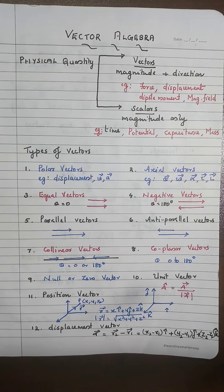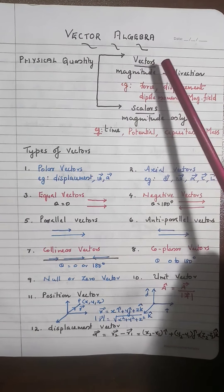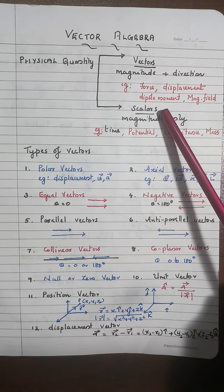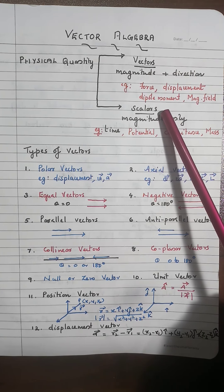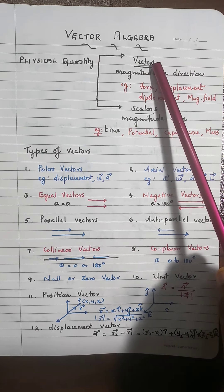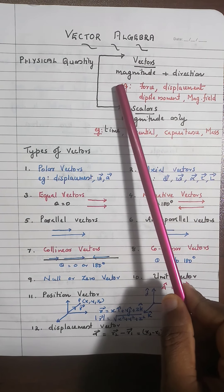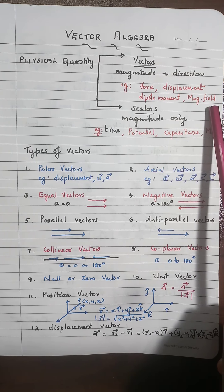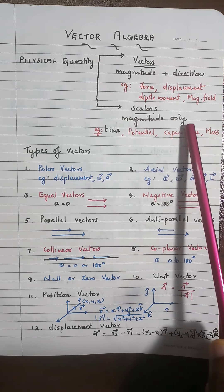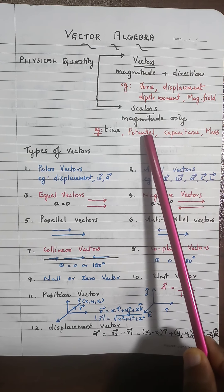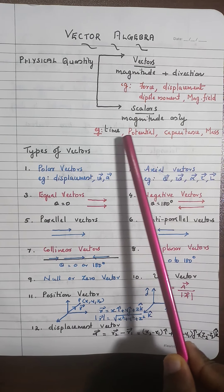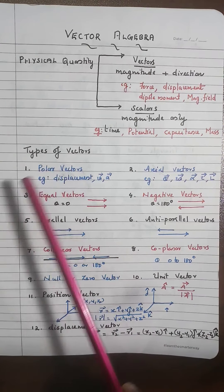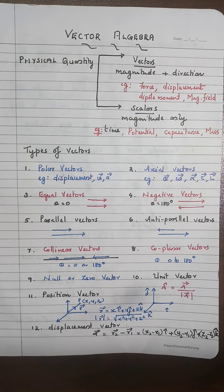We know that physical quantities — measurable quantities — are classified into vectors and scalars. Vectors are physical quantities having both magnitude and direction. Scalars have magnitude only. Good examples of scalars include mass, capacitance, potential, time, energy, etc. In simple terms, we can deal with 12 types of vectors, each one very important.